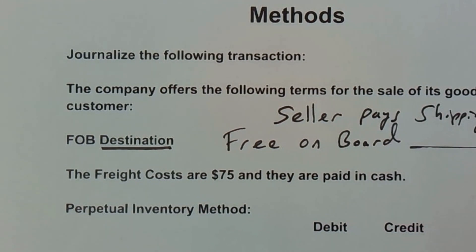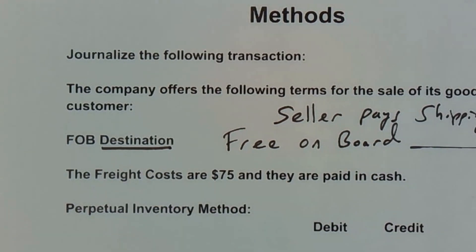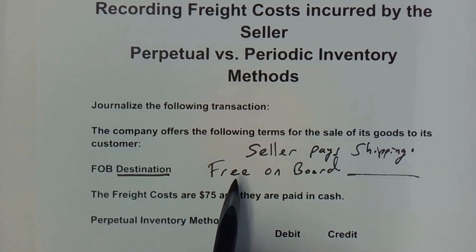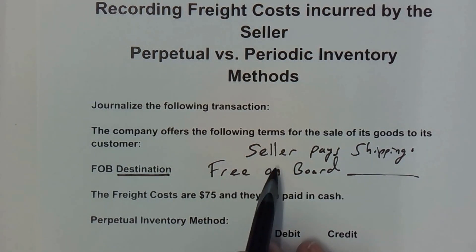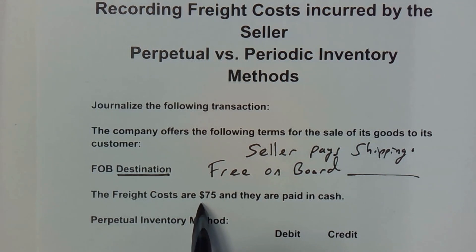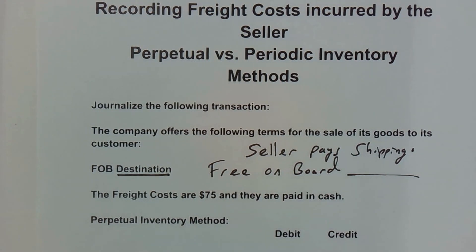The seller pays all the shipping costs if it's FOB destination. Oftentimes, they may increase the price of the item to cover for that. In this example, the freight costs are $75 and they are paid in cash.